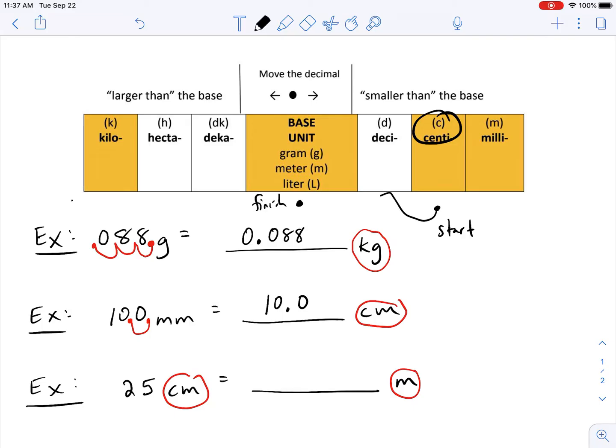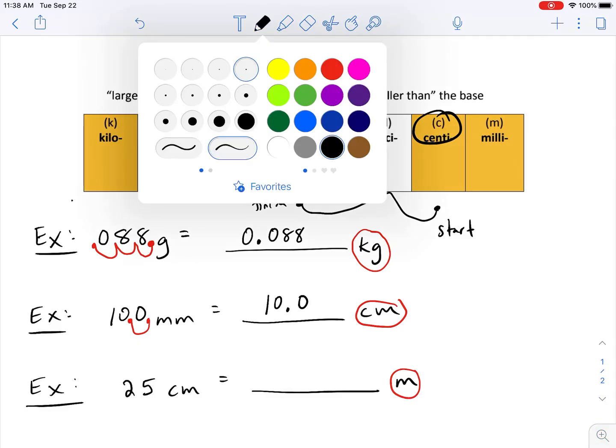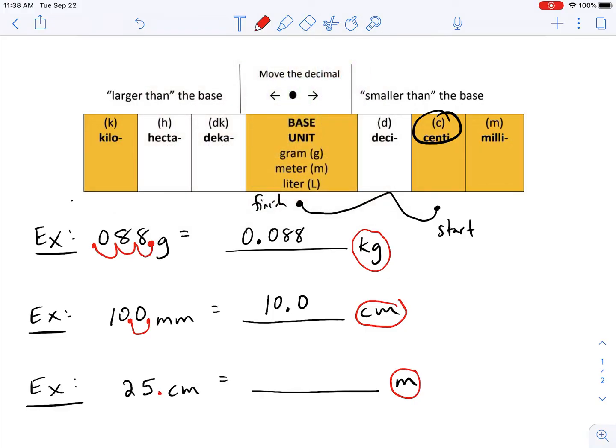So I need to go one, two spots to my left. So I'm going to take this decimal and I move it one, two spots to the left. And then I'm going to rewrite 0.25.